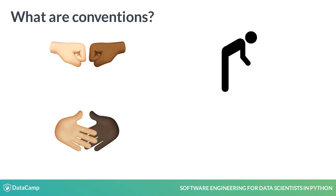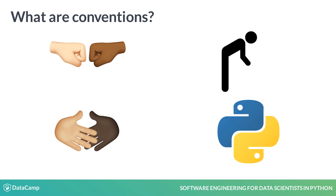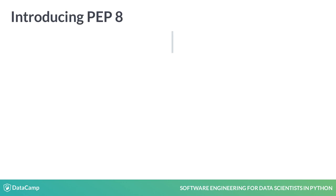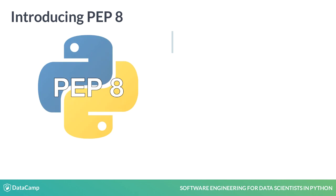These unwritten rules are known as social conventions. The world of software engineering also has conventions that differ based on the language and community. Luckily for Pythonistas, these conventions aren't unwritten. We can turn to Python Enhancement Protocol 8, or PEP8.